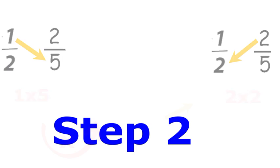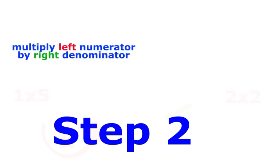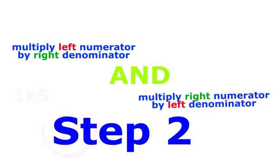Let's repeat the steps. Multiply the left numerator by the right denominator, then multiply the right numerator by the left denominator. Now you should have two numbers. What do you do with these? Let's move to step three.